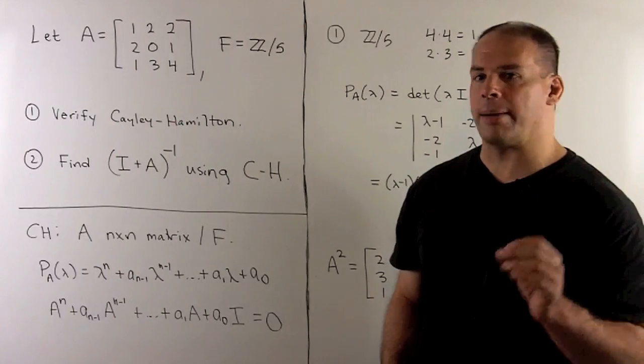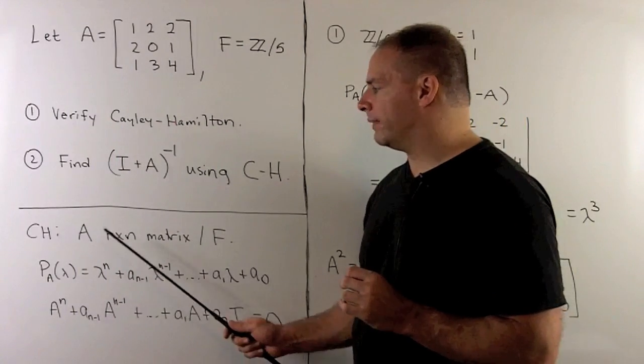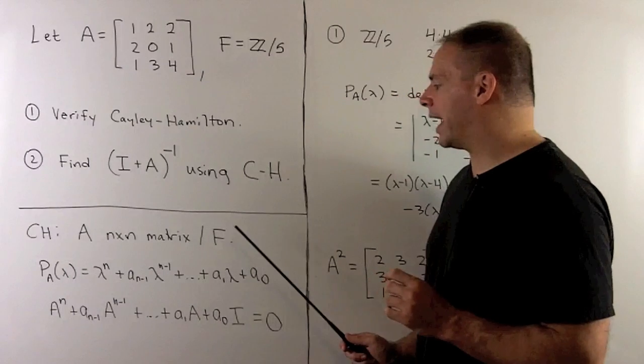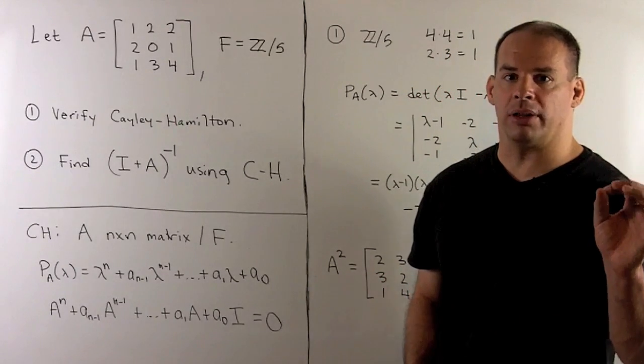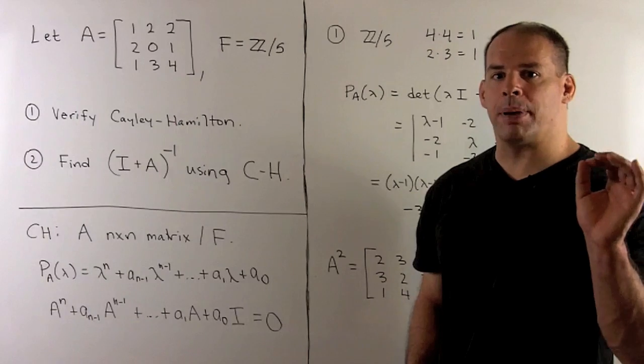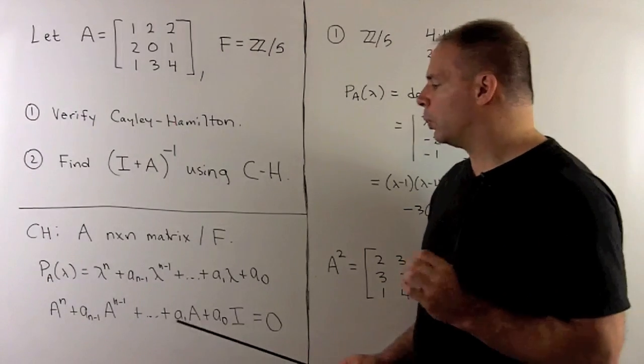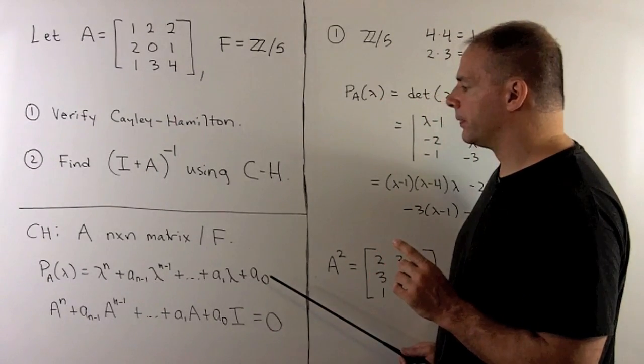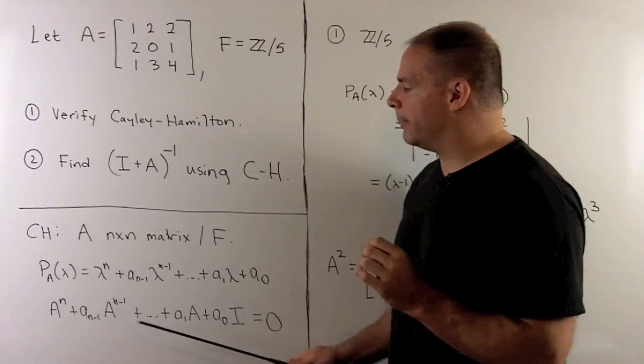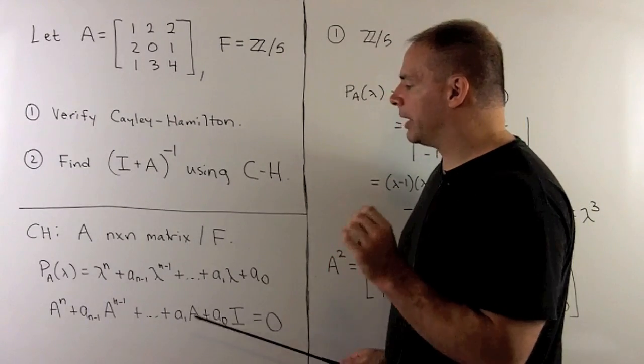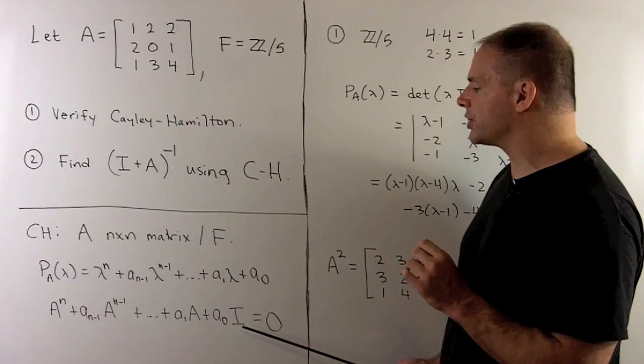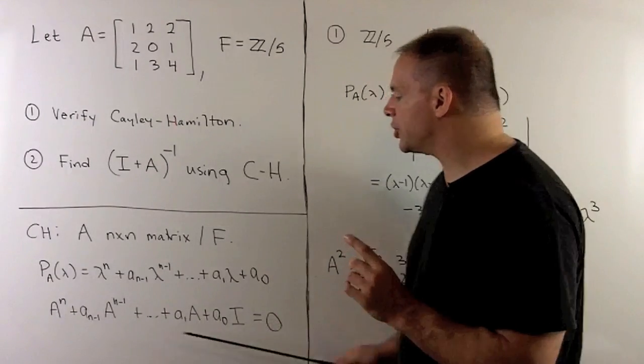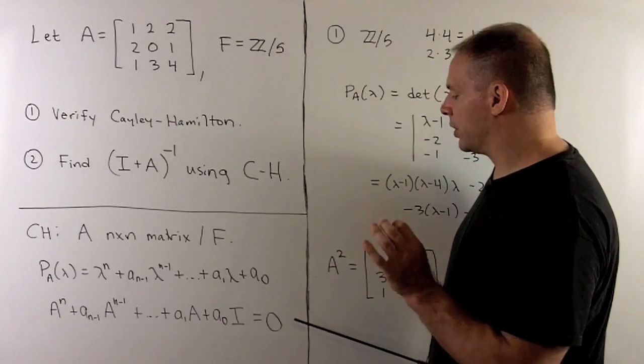The Cayley-Hamilton theorem states: we have A, an n by n matrix with entries in a field F. We form the characteristic polynomial of A, a monic polynomial of degree n with coefficients in our field. If we form the matrix polynomial by replacing lambda with A, multiplying the constant term by the identity matrix, then this expression equals the zero matrix.